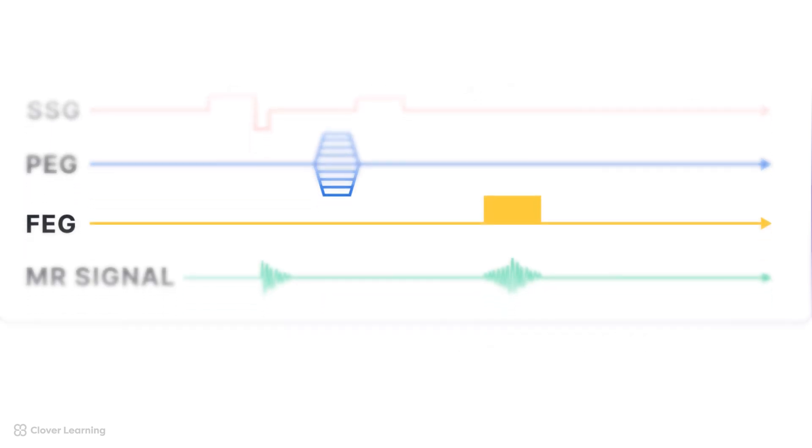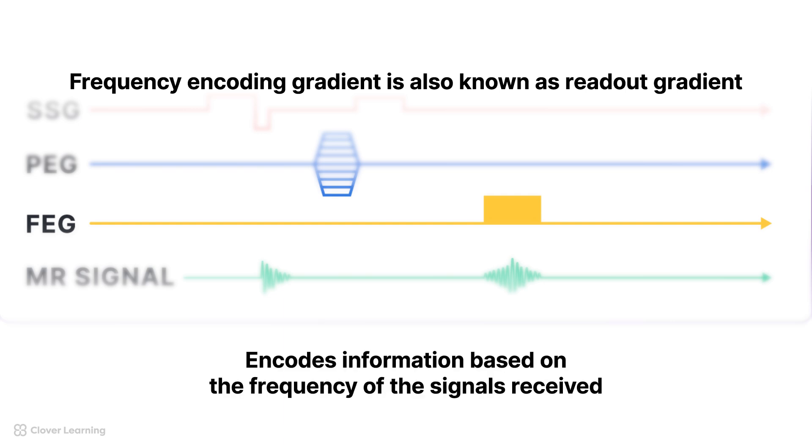The next line depicts the frequency encoding gradient, or FEG. You may see this labeled as G sub F. Also known as readout gradient, it is sometimes shown as a trapezoidal or rectangular shape on the frequency encoding gradient line. It encodes information based on the frequency of the signals received, essential for creating the image. The length and height of the shape on the frequency encoding gradient line also depicts the duration and amplitude of the FEG, which is also known as the sampling time.